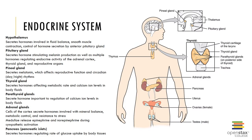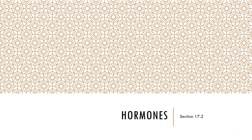Here you can see the general overview of the endocrine system. Now let's look at hormones. Hormones are chemical messengers released by endocrine cells or glands into the bloodstream to be transported throughout the body to regulate the metabolic functions and activities of other cells of the body.